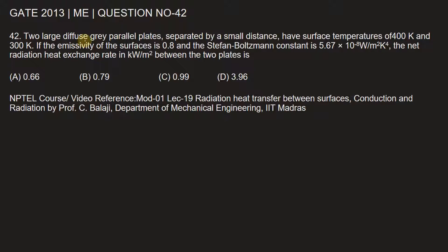The question is: Two large diffuse gray parallel plates separated by a small distance have surface temperatures of 400 Kelvin and 300 Kelvin.